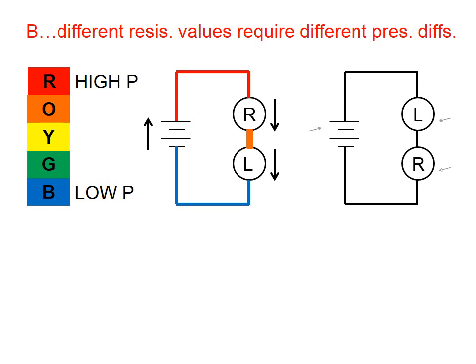If we were to flip these two bulbs, again we have the same current everywhere. The top wire is high pressure red and the bottom wire is low pressure blue. Now, what color would this wire be between the two bulbs in order that the current be the same? It would have to be green. That's because long bulbs have high resistance, and you have to push rather hard to get the same current through a high resistance long bulb compared to a low resistance round bulb.